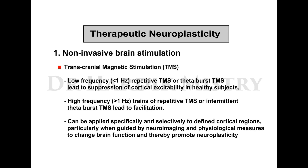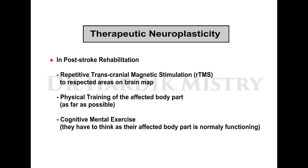Transcranial magnetic stimulation (TMS): low-frequency repetitive TMS or theta burst TMS leads to suppression of cortical excitability, while high-frequency repetitive TMS or intermittent theta burst TMS leads to facilitation. TMS can be applied specifically to defined cortical regions, guided by neuroimaging and physiological measures, to change brain function and promote neuroplasticity. In clinical practice, it is used in post-stroke rehabilitation using three methods: repetitive TMS to respected areas on the brain map, physical training of the affected body part, and cognitive mental exercise. Deep brain stimulation and neuropharmacology are still under research.